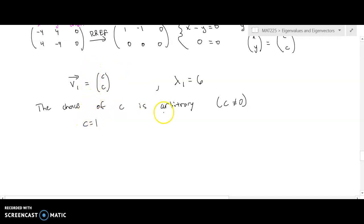So, I like to start off, I like to just assign C equal to 1. Therefore, my particular V1 would equal [1, 1].